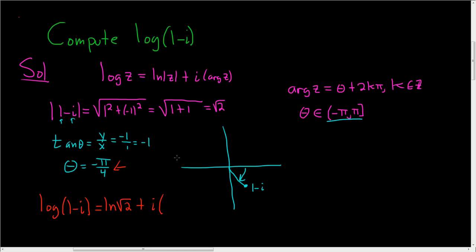Well, we already found theta, so we plug it into the argument formula. So negative pi over 4, and then we have the 2k pi. And in all of this, k is an integer.